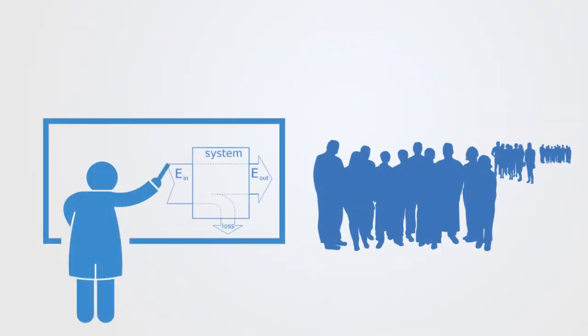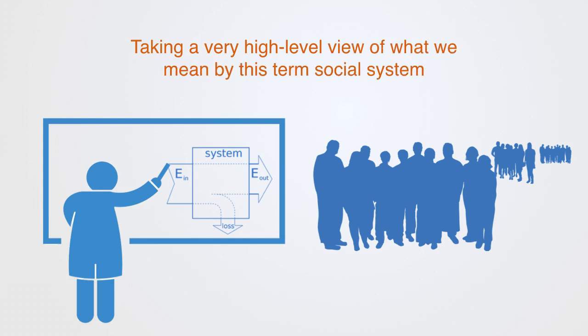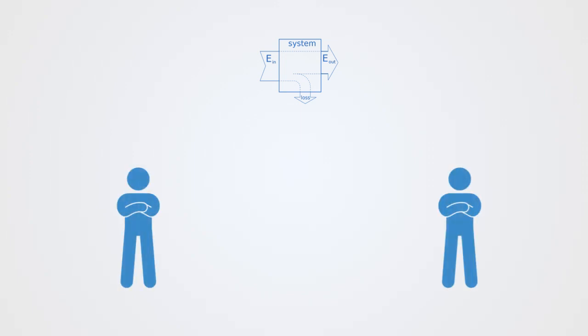The idea of a system is central to dealing with complexity, as it offers us a very abstract model and a solid basis on which to structure our reasoning about complex social systems. In this video we'll be taking a very high level view of what we mean by this term social system, and then we'll be digging further into each aspect of it in coming videos. So we'll be outlining our basic model as consisting of social actors called agents and a set of relations between them.